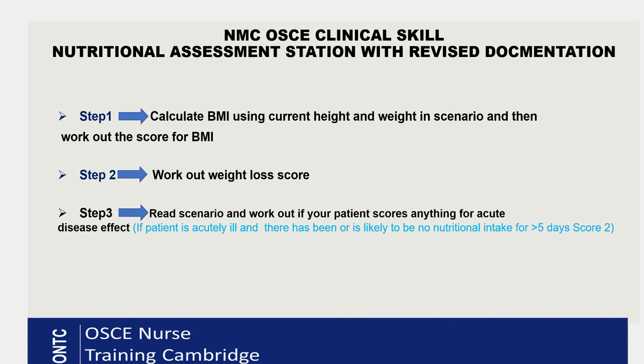In today's scenario, I'm going to show you when the percentage is already given, because that's happening quite a lot now — they don't give you the weight loss chart, they just tell you the percentage already worked out in the scenario. You still need to score the patient from that percentage. Step 3 is reading the scenario and identifying if your patient is acutely ill and has had no nutritional intake for more than five days in the past, or is likely to have none for more than five days in future.